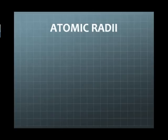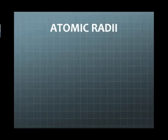As you go down a group within the periodic table, you are adding an energy level each period that you go down, and as you add an energy level you're actually increasing the atomic size — making that electron cloud larger. As you go across a period, you are adding protons, one per box, increasing the nuclear charge. As the nuclear charge increases, the positive pull of the nucleus pulls electrons in, and you subsequently reduce the size of the atom.